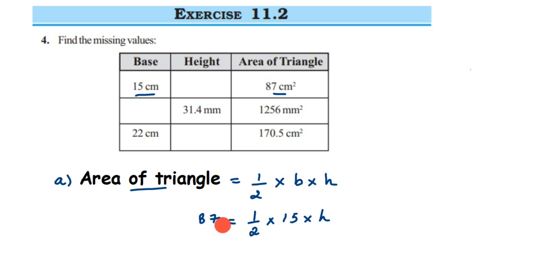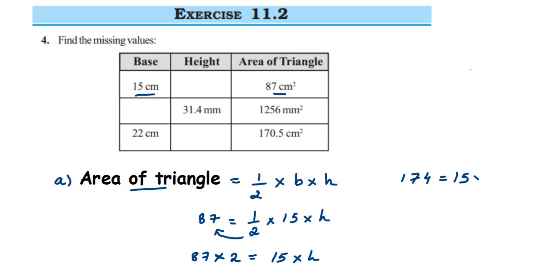To solve, transpose the 2 to the other side. Since 2 is in division, it becomes multiplication: 87 × 2 = 15 × h, which gives 174 = 15 × h. Then transpose 15 to the other side — since it's in multiplication it becomes division — so h = 174 ÷ 15.